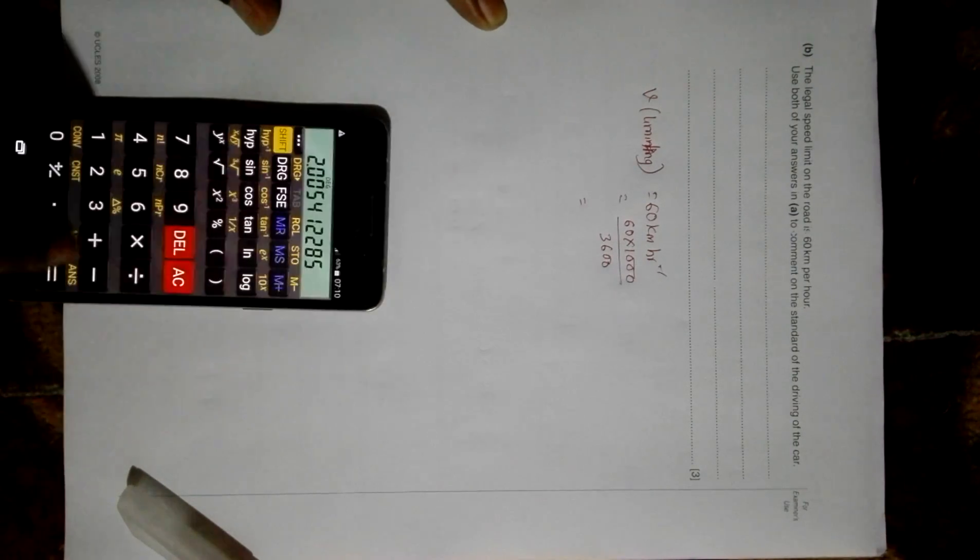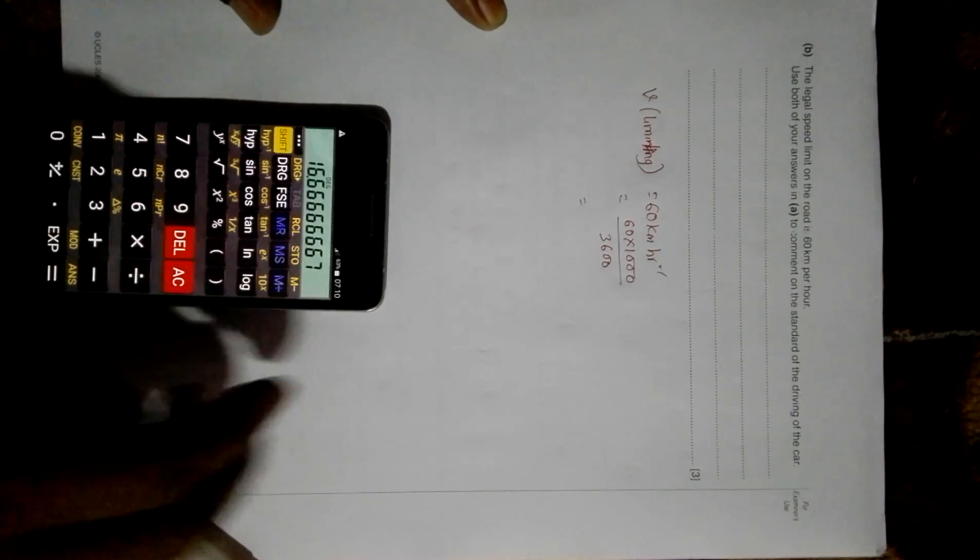Let's convert this into meters per second. It is 60 into 1000 by 3600, which gives us 16.67 meters per second.